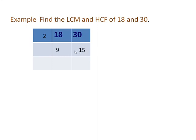Now 9 and 15 are both odd numbers and both appear in the table of 3, so we take 3 as a prime factor. Divide 9 by 3 to get 3, and divide 15 by 3 to get 5. Now 3 and 5 do not have any common factor, so we stop the factorization here. The factors on the left-hand side are common factors, and those written below the table are uncommon factors. For HCF we take only common factors, while for LCM we multiply common factors along with uncommon factors.